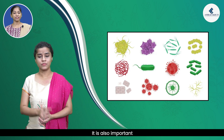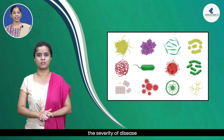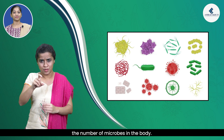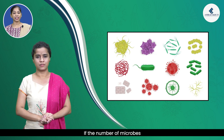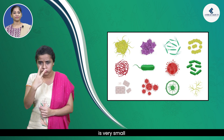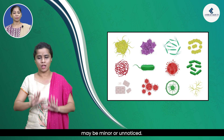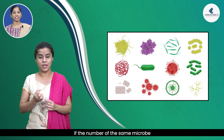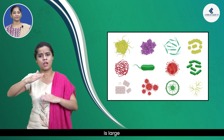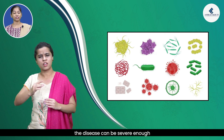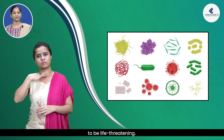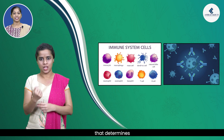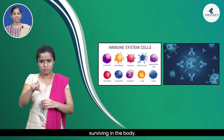It is also important to remember that the severity of disease manifestations depends on the number of microbes in the body. If the number of microbes is very small, the disease manifestations may be minor or unnoticed. But if the number of microbes is large, the disease can be severe enough to be life-threatening. The immune system is a major factor that determines the number of microbes surviving in the body.